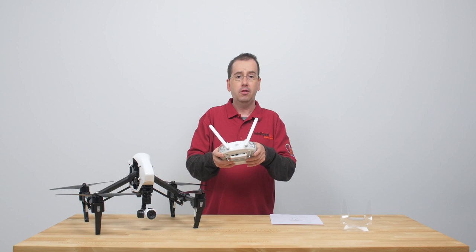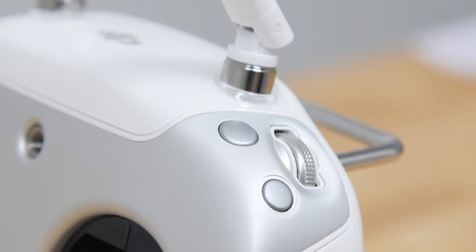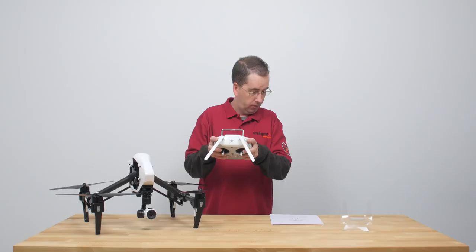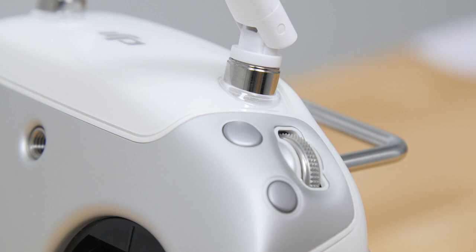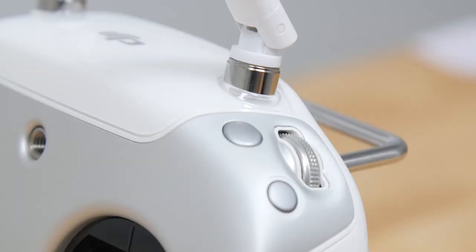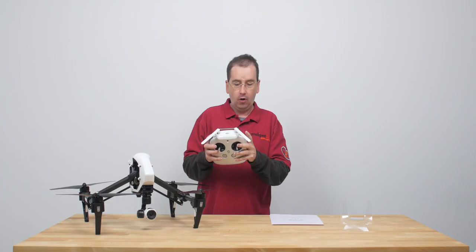Now that we've seen the controls on the front of the radio, let's take a look at the back. So we have the camera dial. Below this we have the playback button which is going to allow us to look at our gallery on the iPad so we can look at the videos that we've recorded already. The next button below this is the shutter button. This will allow us to snap pictures while we're in flight.